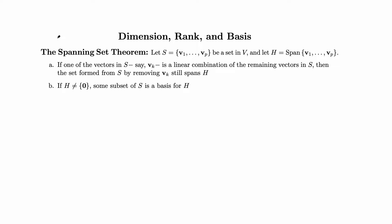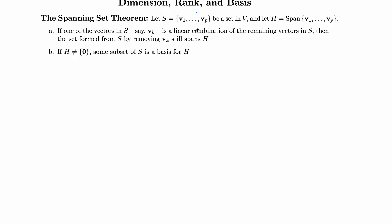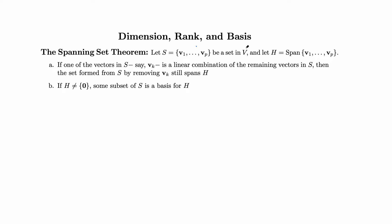The next theorem is the Spanning Set Theorem. Let S be a collection of vectors v1, v2, all the way to vp — a set in a vector space V. We have a collection of vectors from vector space V, and we call that collection S. Let H be the span of these vectors — all the possible linear combinations of these vectors — which is a subspace, and we call that H.